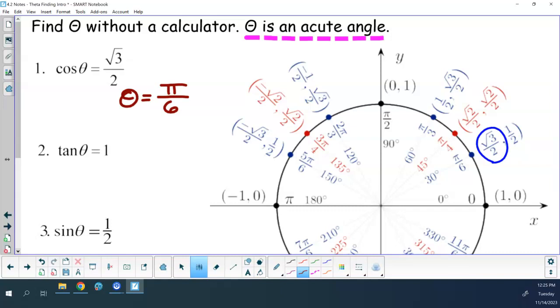Looking only in quadrant number 1, where is my tangent 1? Pi over 4. Why pi over 4? What is tangent? It's y over x, right? So they have to be the same in order for it to be equal to 1. That happens in quadrant 1 at pi over 4.